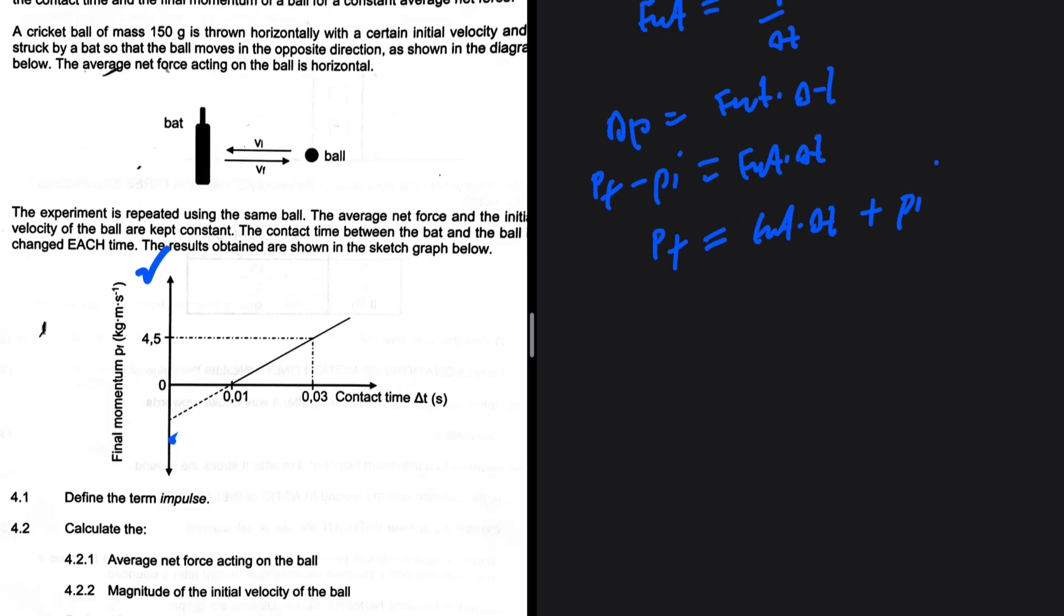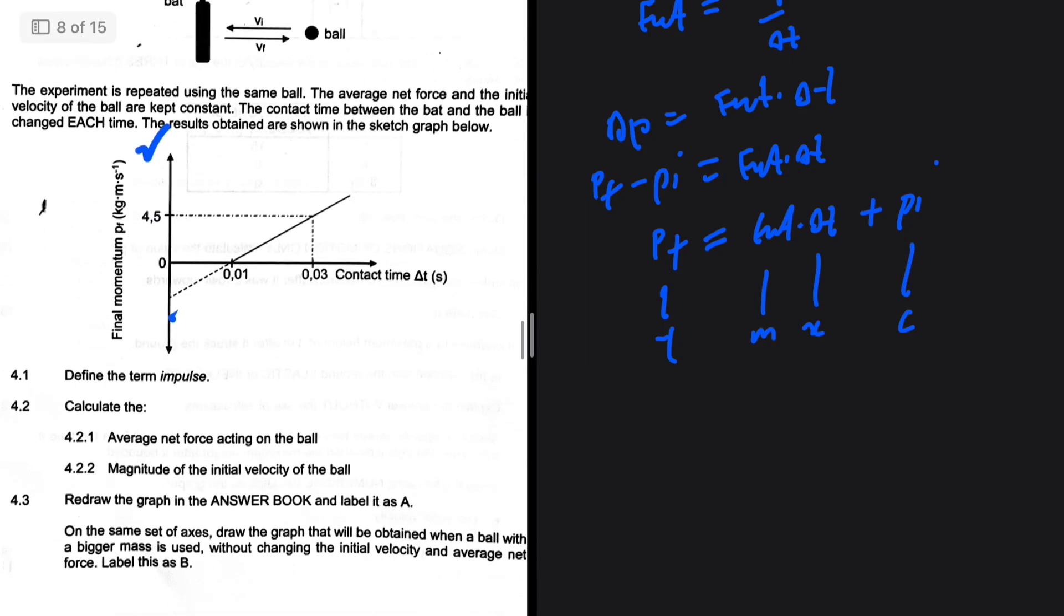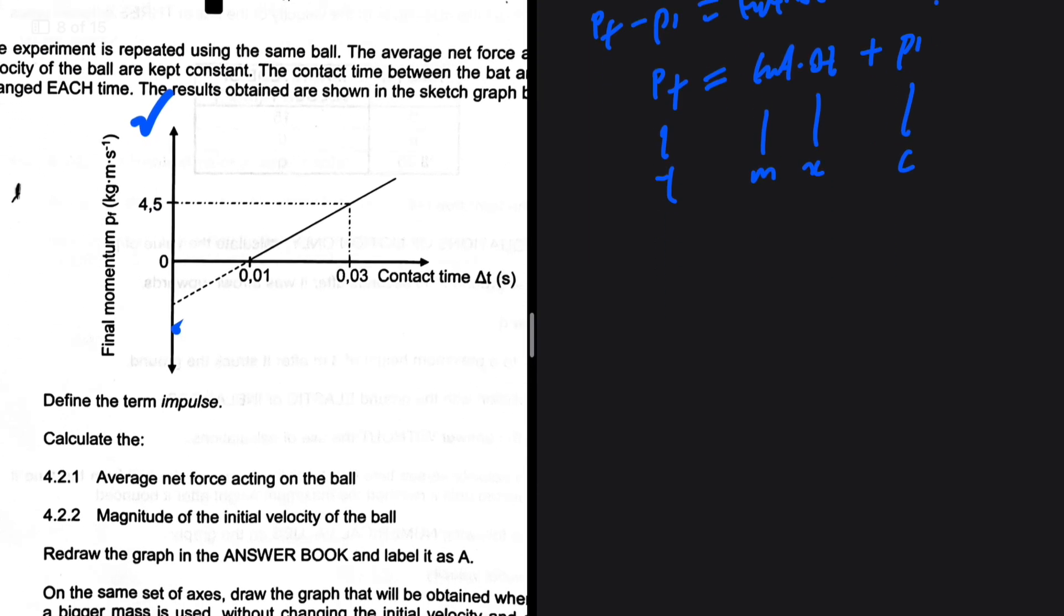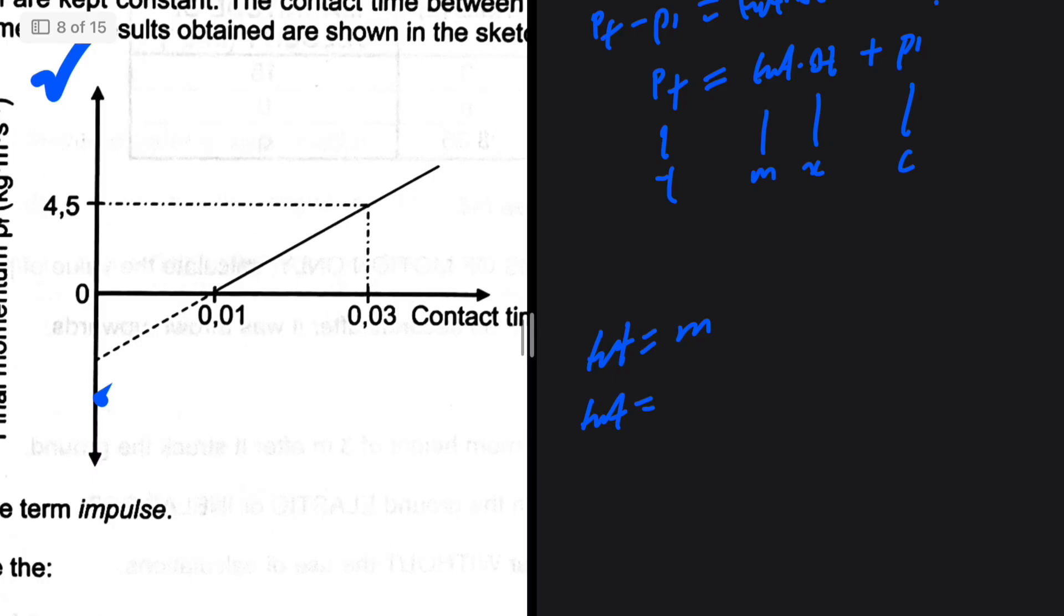4.2.1 says calculate the average net force. So the net force therefore equals the gradient. So the net force is going to be, let's find the gradient between these two points: that will be 4.5 minus 0 divided by 0.03 minus 0.01. That is 225 newtons.